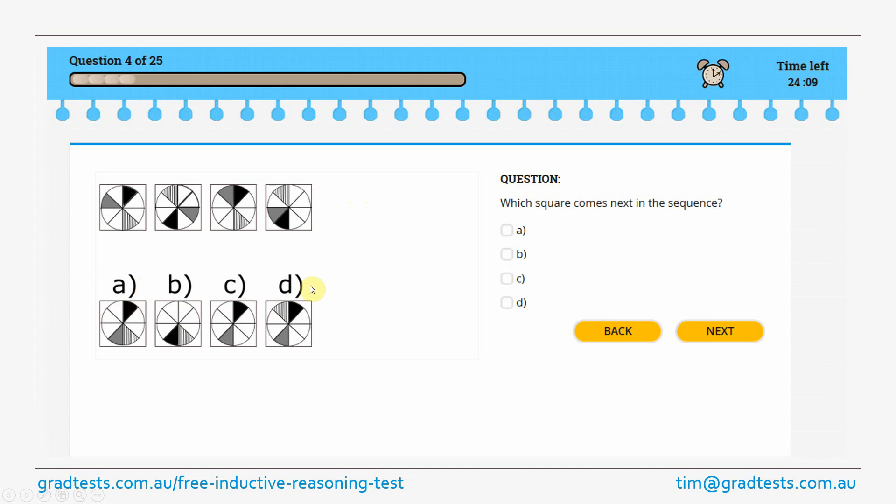and A, C, and D are still options. Okay, what about now, let's say, the hatched segment. Let's look at it. So it's going from this position to this one, back to this one again, back up to this one. It's kind of a similar concept compared to the black segment, so we'd expect then that in the fifth square it's back down to this bottom right position. So let's look at our options. Remember,